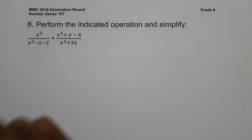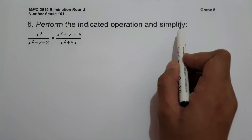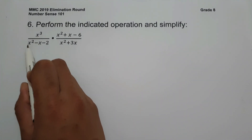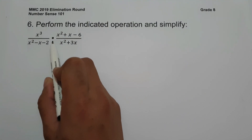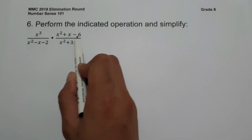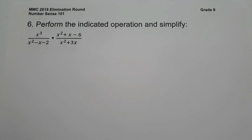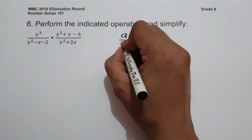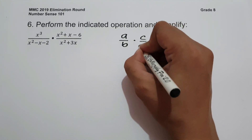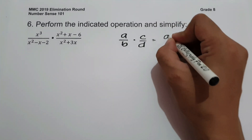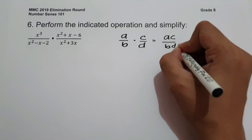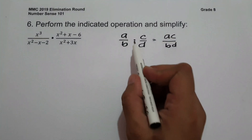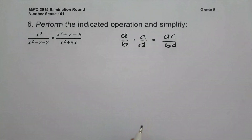On number 6, perform the indicated operation and simplify: x³ over (x² - x - 2) multiplied by (x² + x - 6) all over (x² + 3x). The given operation is multiplication. When we multiply fractions, we multiply numerator by numerator and denominator by denominator.